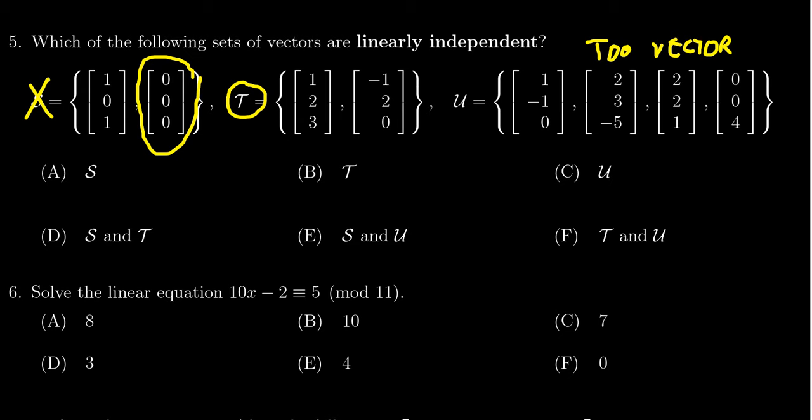One of the variables would have to be a free variable. And because there's a free variable in the system, that would give you multiple solutions—that would give you non-trivial solutions to the homogeneous system. If you have too many vectors, then you are automatically linearly dependent.